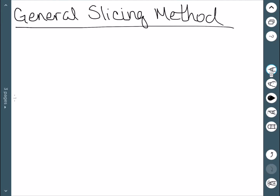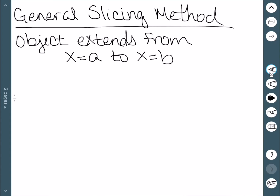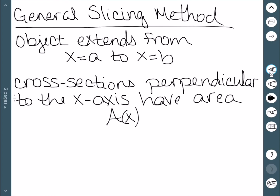We'll now look at finding the volume of a three-dimensional object, and we're going to do this first by using something called the general slicing method. The first thing we need is that the object extends from x equal to a to x equal to b, so this will give us an idea of how big this object is in relation to the x direction. The other thing we'll need is that cross sections perpendicular to the x-axis need to have some kind of area, A of x. Then we can find the volume of this object by integrating from a to b of this area function dx.